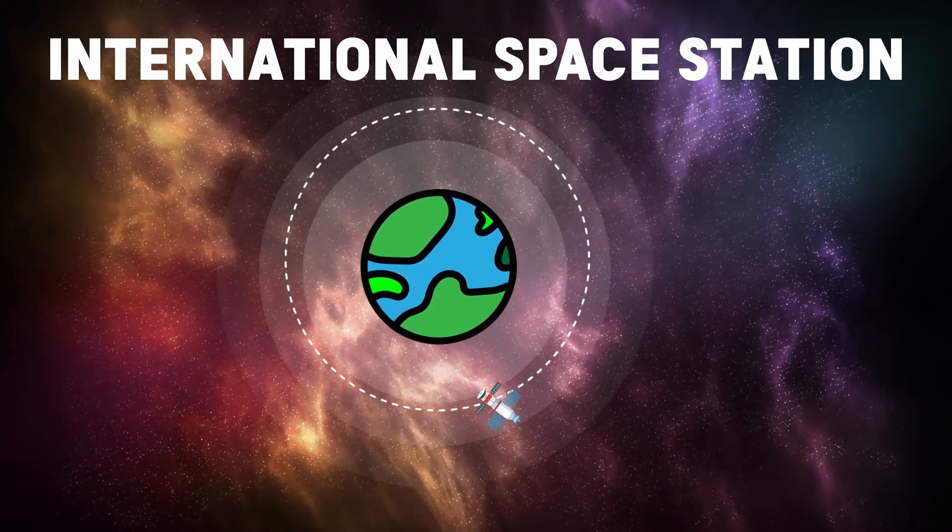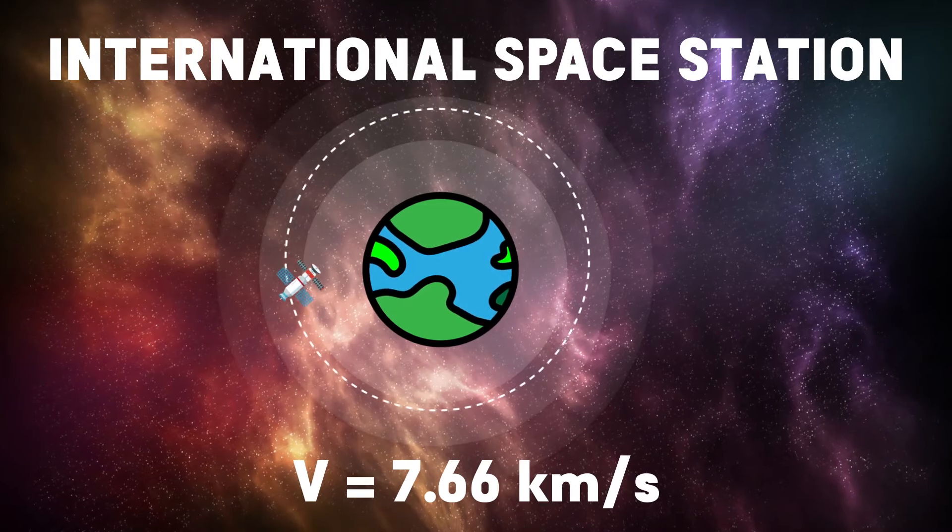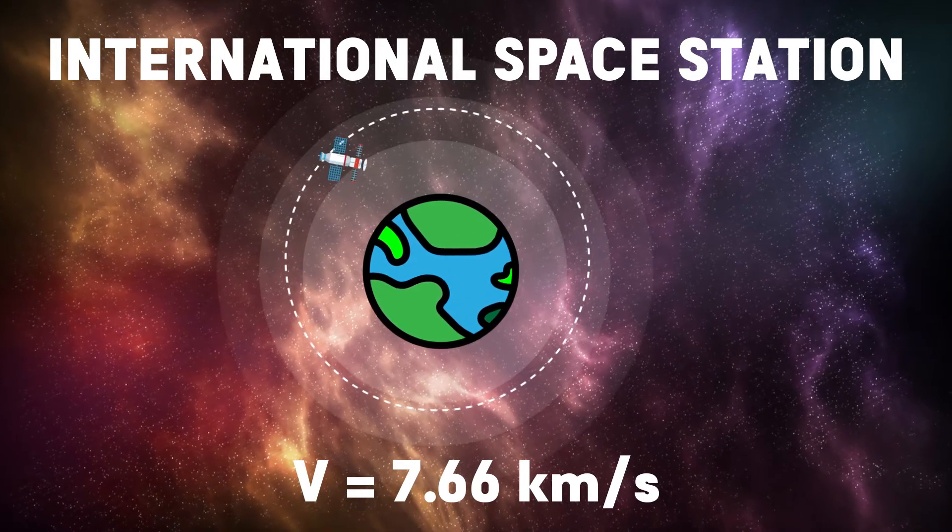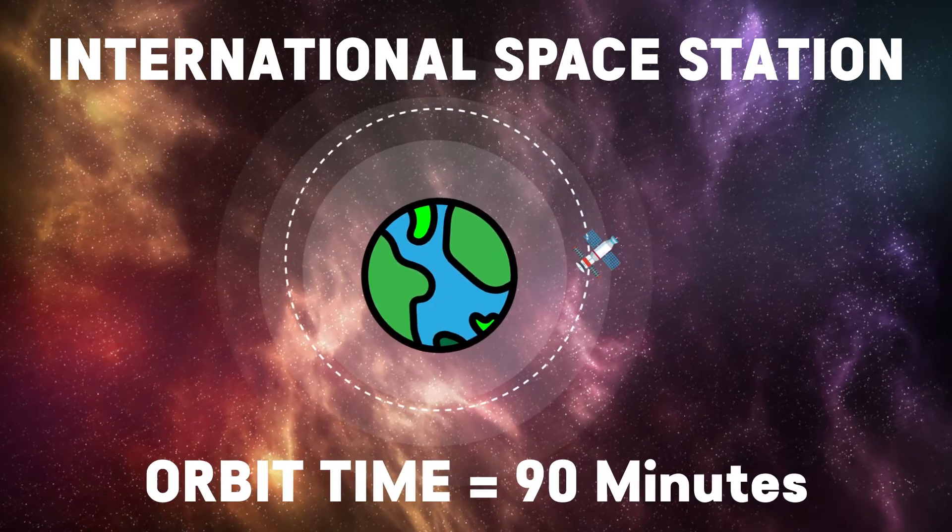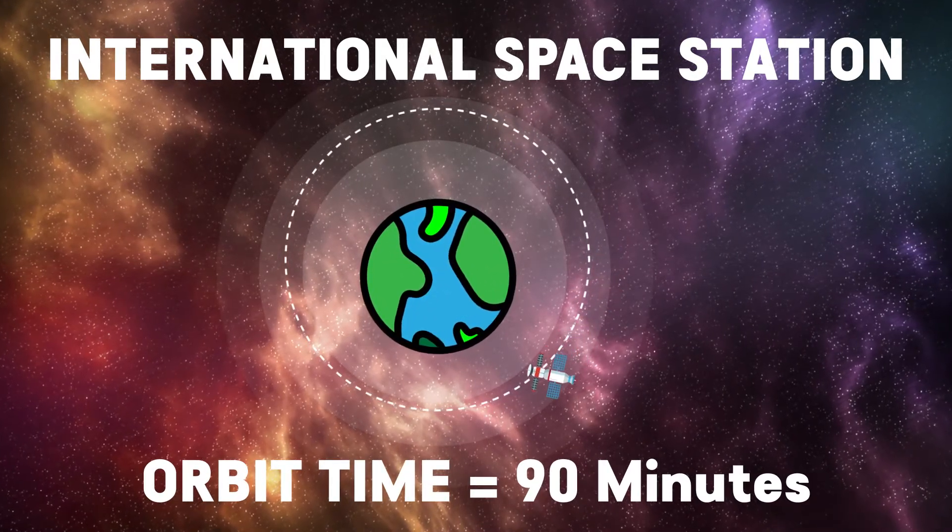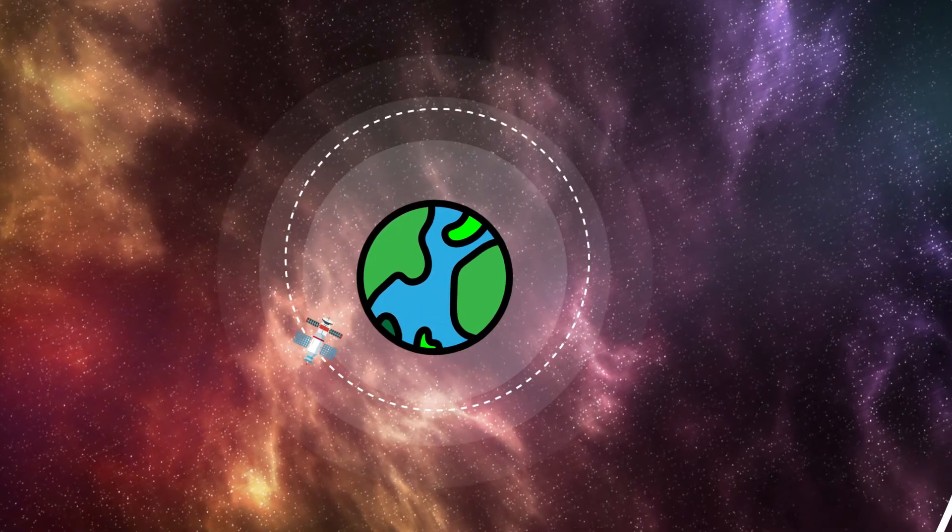The International Space Station orbits around the Earth at the speed of 7.66 km per second at the altitude of around 400 km. It can orbit the Earth in just 90 minutes. As we go higher and higher, to orbit around, we require less speed.